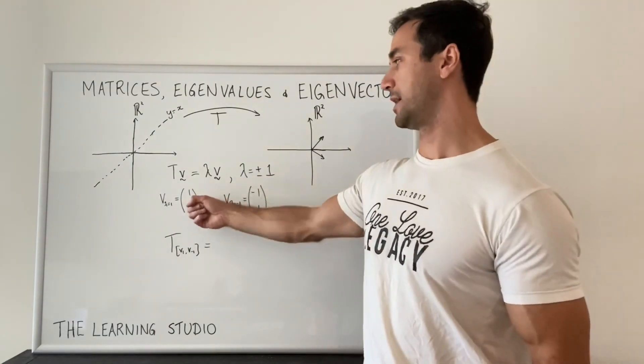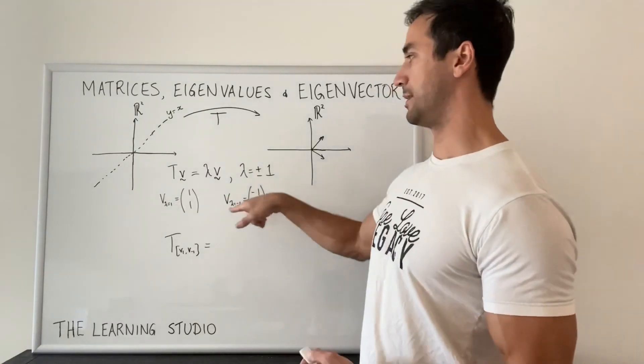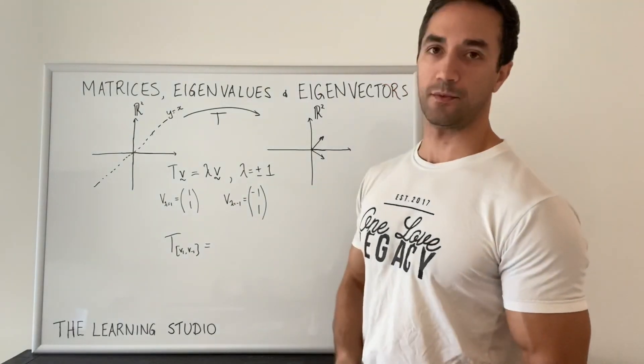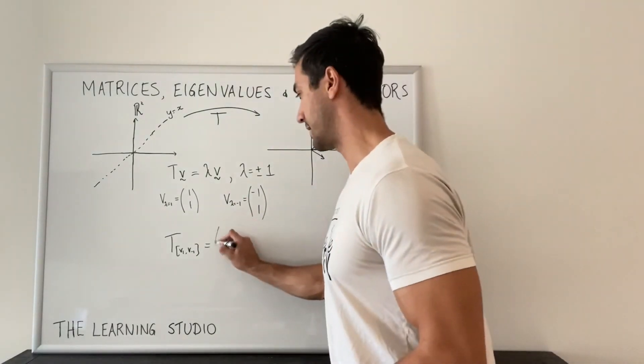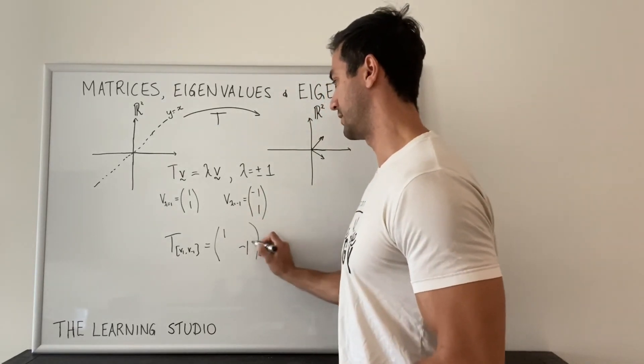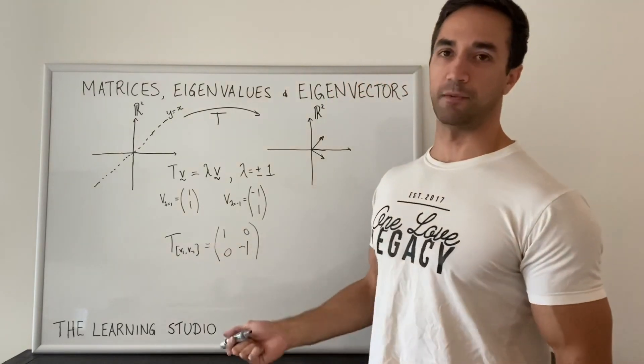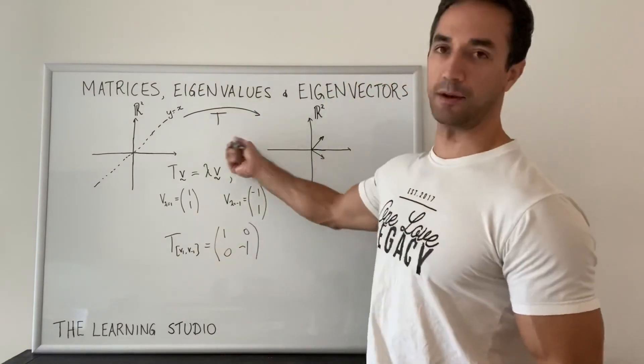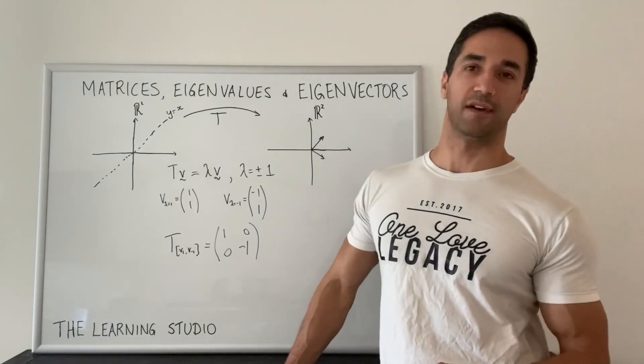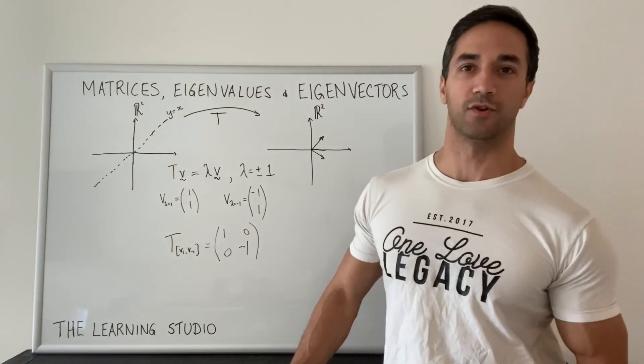so if I choose these to be my basis vectors, then the matrix that I end up with for T is the diagonal matrix, which is going to have the eigenvalues on the diagonal. And this is a much simpler matrix to work with if you're going to be using it a lot. So I hope this kind of clears up some of the confusion you might have had with these concepts. Let me know if there's anything else you'd like me to talk about in the comments.